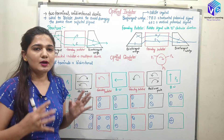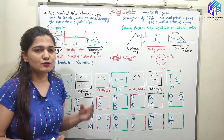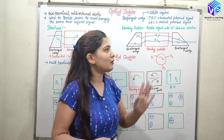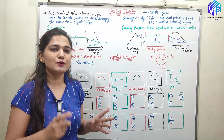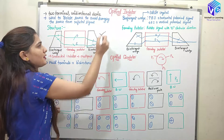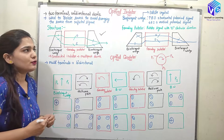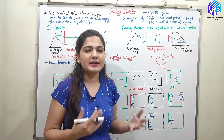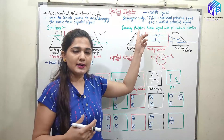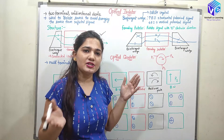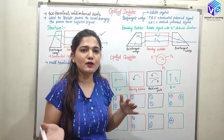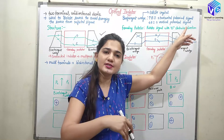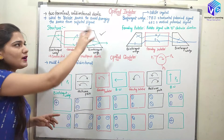Now coming to the Faraday rotator — as the name suggests, it is a rotator. It rotates the signal 45 degrees in the clockwise direction. This 45-degree clockwise rotation is set for the particular purpose of making the optical isolator. The rotation depends upon the magnetic field density, the length of the rotator, and the material. By changing the magnetic field density or the length of the rotator, we can easily change the angle of rotation and also the direction of rotation.